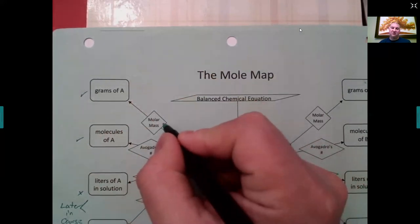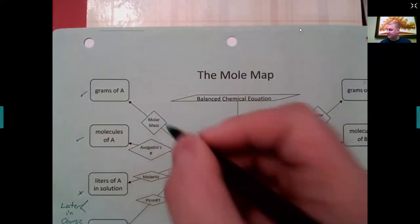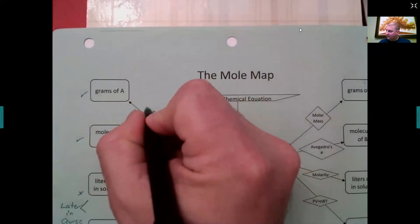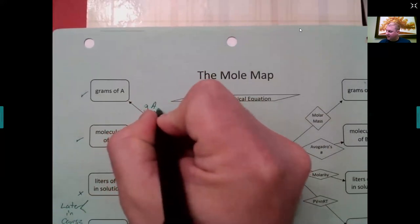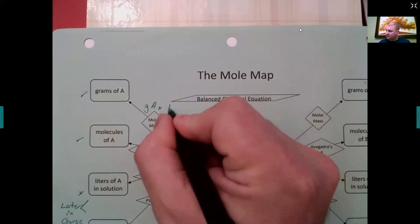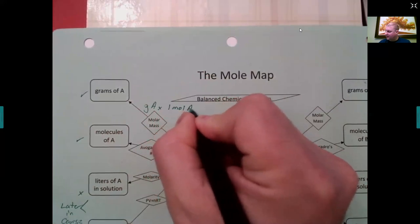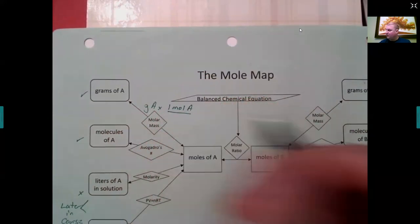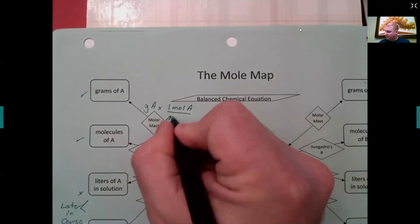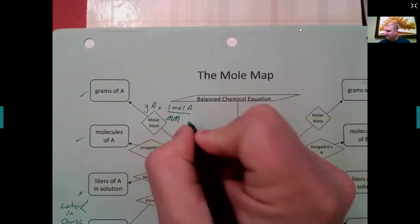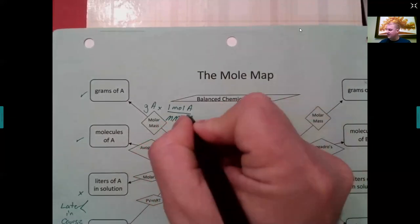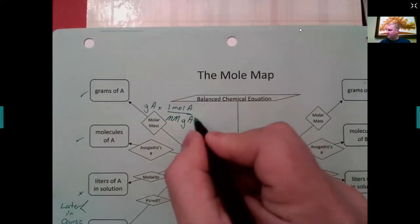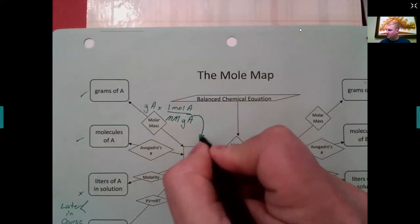The mole map reminds you that to go from grams of A to moles of A, you use the molar mass. The conversion is: grams of A times one mole of A, divided by the molar mass in grams of A — and that gives you moles.